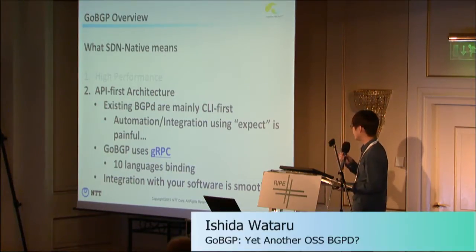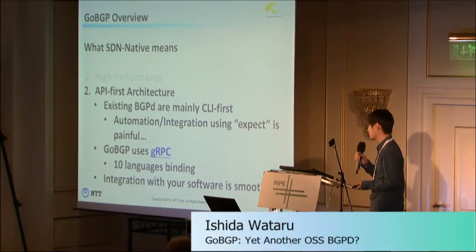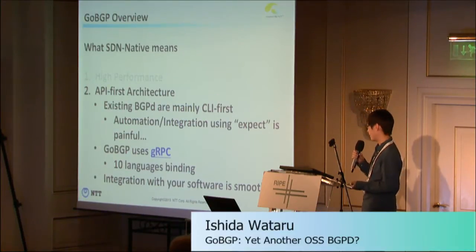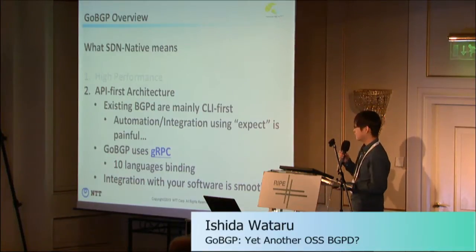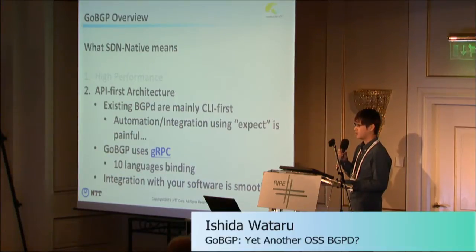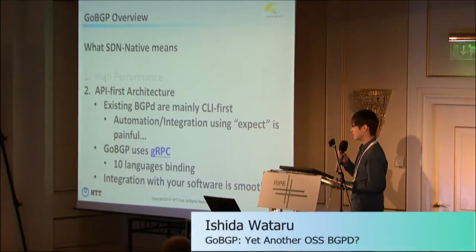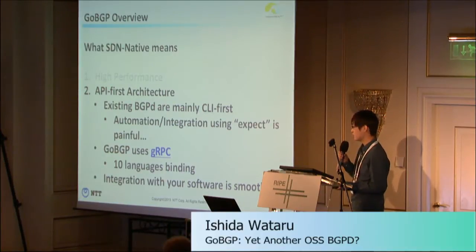The second is API-first architecture. Existing BGP implementations are mainly CLI-first, so if you want to do some automation or integration, you have to use the expect library, which is very painful. GoBGP uses gRPC, an RPC framework initially developed by Google and Square. It uses HTTP/2 for the transport layer and protocol buffers for serialization, and it has 10 language bindings, so integration with your software is smooth.